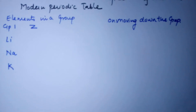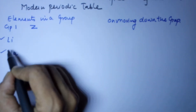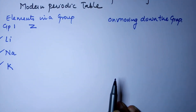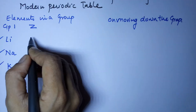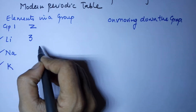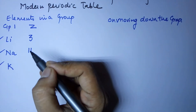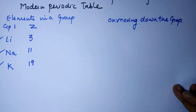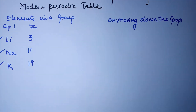Good morning students. In today's class I'll be talking about the elements of a particular group and their properties in the modern periodic table. I've taken the example of Group 1 elements, also known as the alkali metals. Their atomic numbers are: lithium - 3, sodium - 11, and potassium - 19. I'm taking this topic only up to Class 10th CBSE.